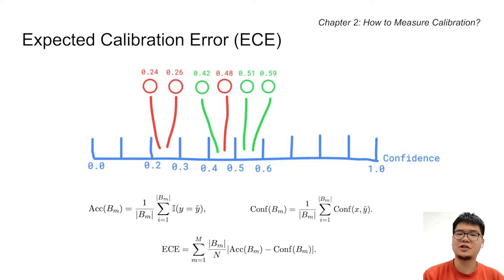Model predictions, visualized as the circles here, are put into the buckets corresponding to their confidence ranges. For example, the predictions with confidence 0.24 and 0.26 are put into the bucket with range 0.2 to 0.3.